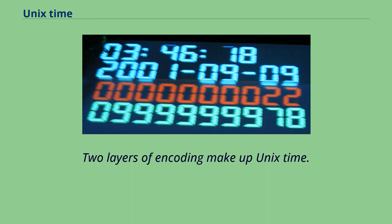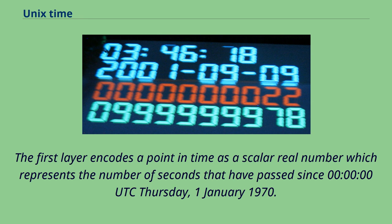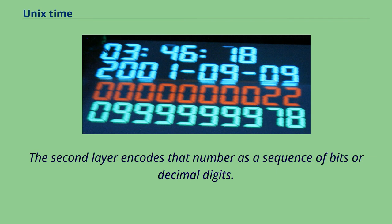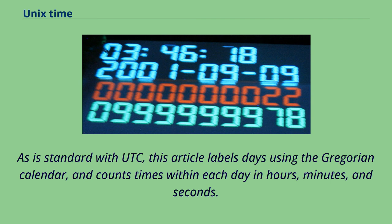Two layers of encoding make up Unix time. The first layer encodes a point in time as a scalar real number representing the number of seconds that have passed since 00:00:00 UTC Thursday, January 1, 1970. The second layer encodes that number as a sequence of bits or decimal digits. Days are labeled using the Gregorian calendar, and times within each day are counted in hours, minutes, and seconds.